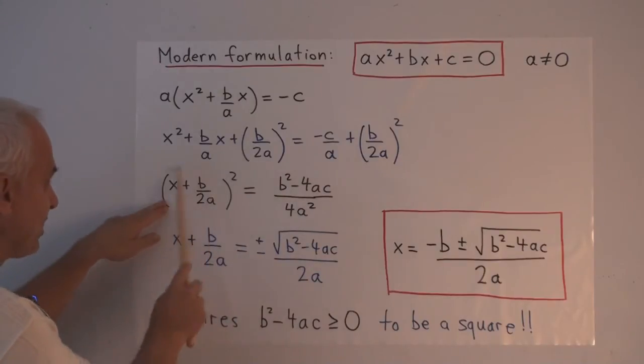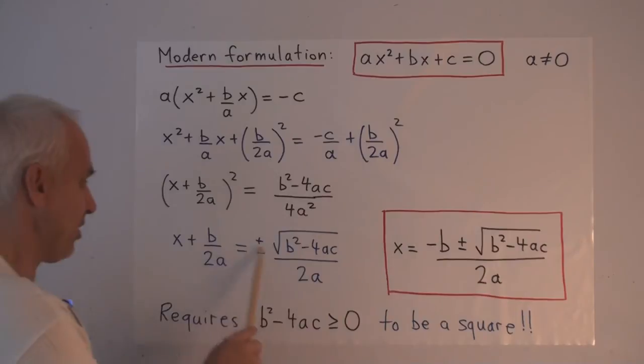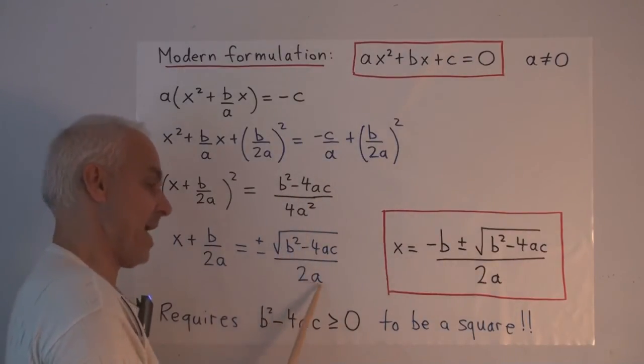So this squared equals this quantity. So what's inside is the square root of the right-hand side. So we put the square root of the numerator and square root of the denominator—well, that will be 2a.